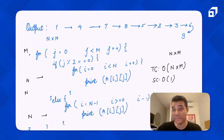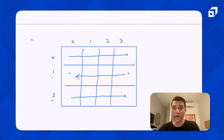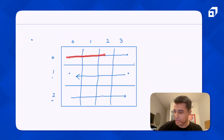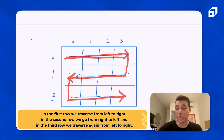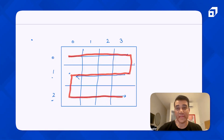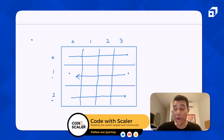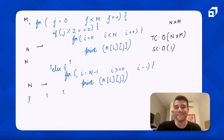An extra homework question based on what we just discussed: you're given a 2D matrix of n cross m size, and this time you have to go row by row. The first row is traversed left to right, the second row right to left, the third row left to right, and so on — going in an alternating manner row by row. I hope you've understood this question and will be able to convert this pseudocode into your favorite programming language. That would be all for this video. Thank you.